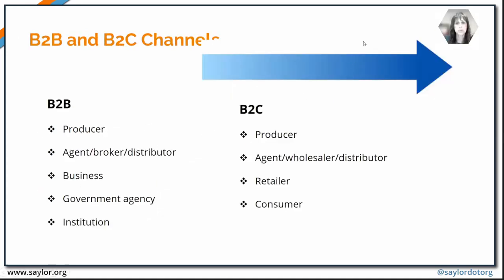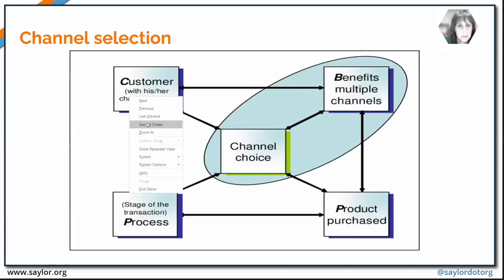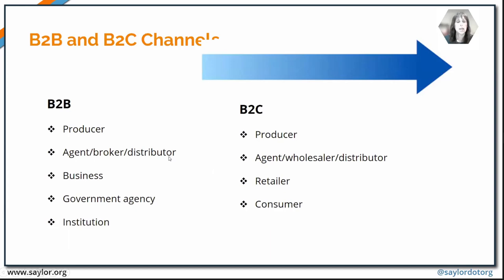There are differences between business-to-business and business-to-consumer channels. A business-to-business purchase begins with the producer, then moves either to an agent, broker, or distributor, and then to the buyer — which could be a business, a government agency, or an institution. A business-to-consumer purchase goes through different steps: it starts the same way with a producer and an agent, wholesaler, or distributor, but then the next step is to the retailer, who sells directly to the consumer.